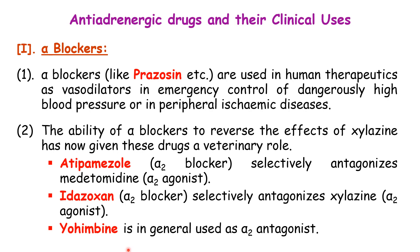For the clinical uses of anti-adrenergic drugs, starting with alpha blockers: the alpha-1 blocker, such as prazosin, is used in human therapeutics as a vasodilator in emergency control of dangerously high blood pressure or in peripheral ischemic diseases. Since alpha-1 mediates vasoconstriction, giving an alpha-1 blocker reverses that effect, inducing vasodilation, which is indicated for hypertension.